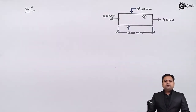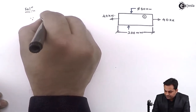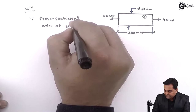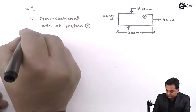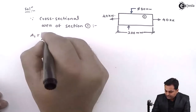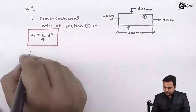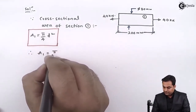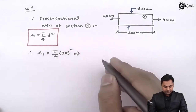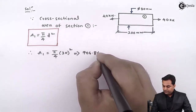The first thing I'll calculate is the cross-sectional area of section one. Area A1 = π/4 × d² = π/4 × 30² = 706.86 mm².